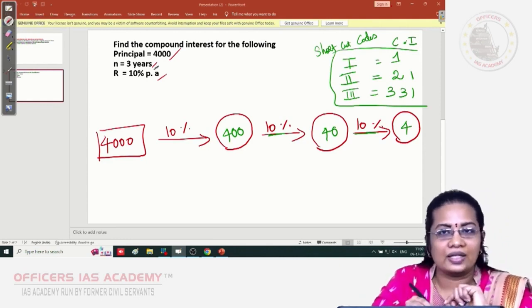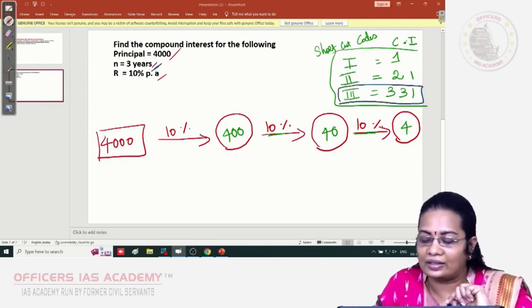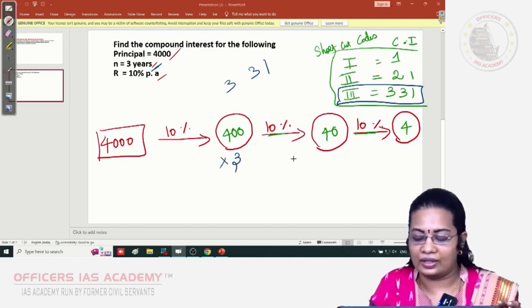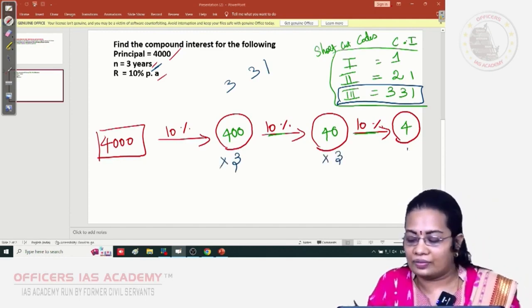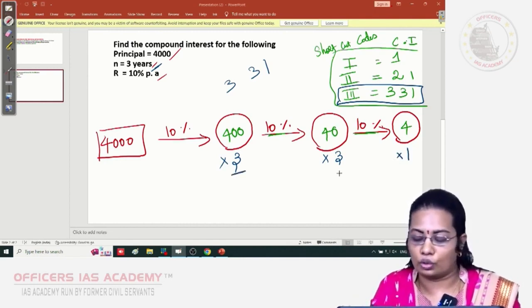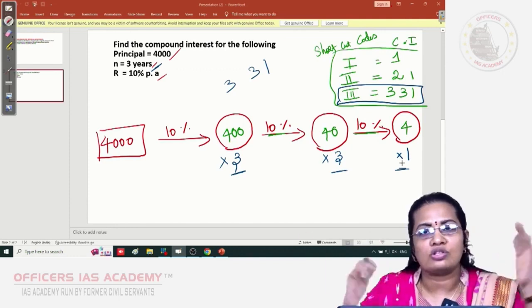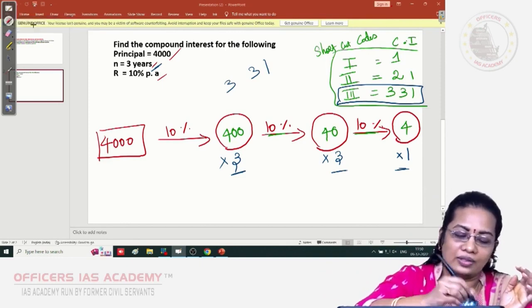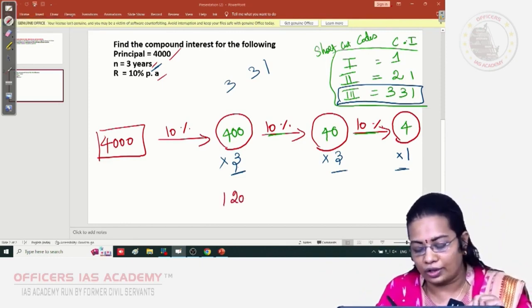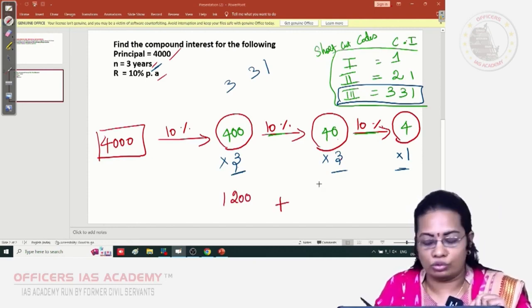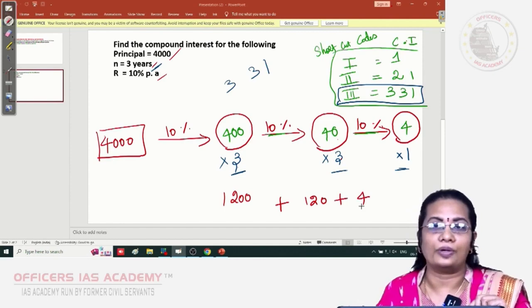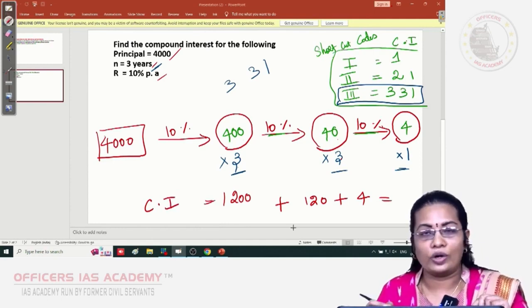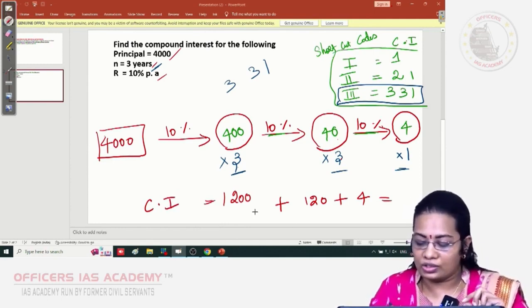How many years given? Three years. So take the three-year code: 3, 3, 1. First circle multiply with 3, second circle with the second 3, final circle with 1. Now multiply the values and accumulate. 400 × 3 = 1,200 rupees, plus 40 × 3 = 120 rupees, plus 4 × 1 = 4 rupees. Add all: 1,200 + 120 = 1,320, plus 4 = 1,324.